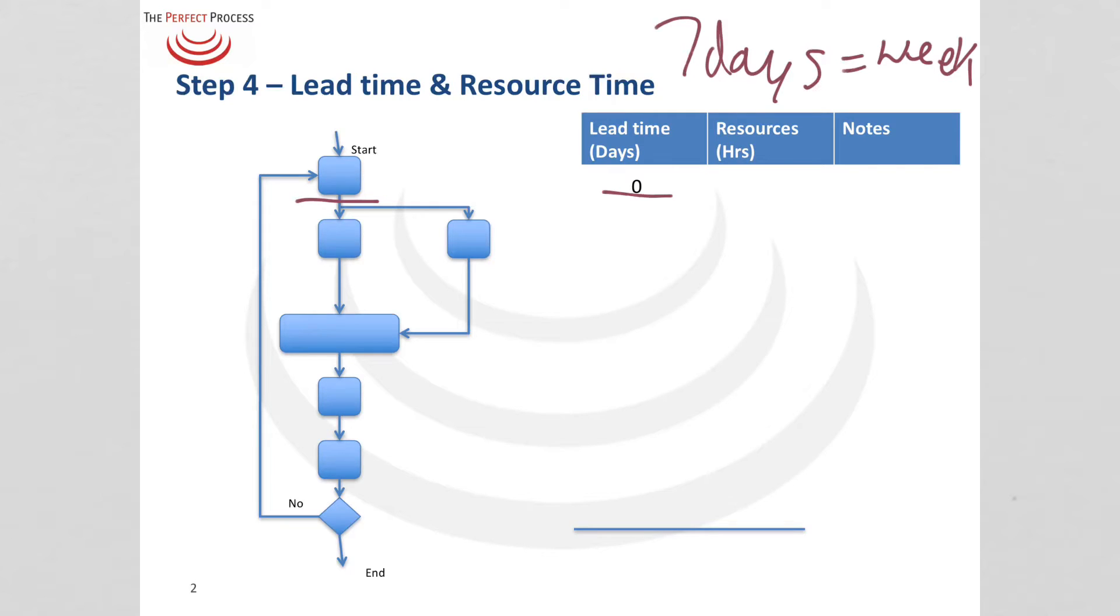So we enter a zero on the first activity and what we see here is two activities that start three days later so we enter a three in the lead time column. Then 18 days later we see that we have a meeting so we add 18 to the three to give us 21.